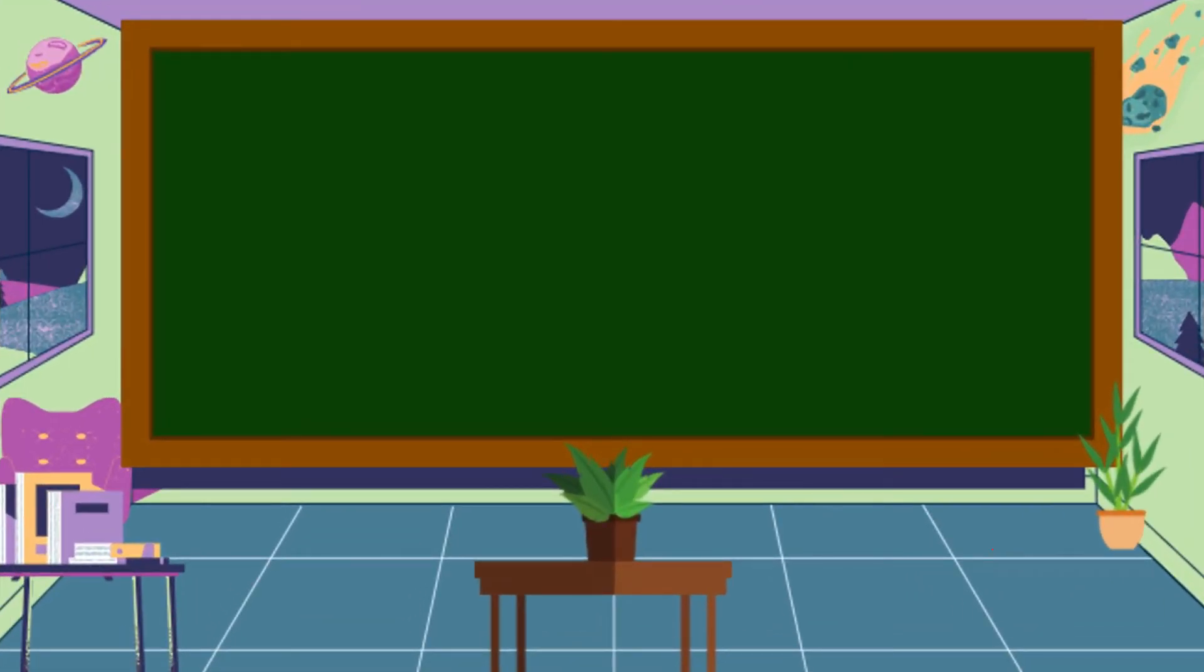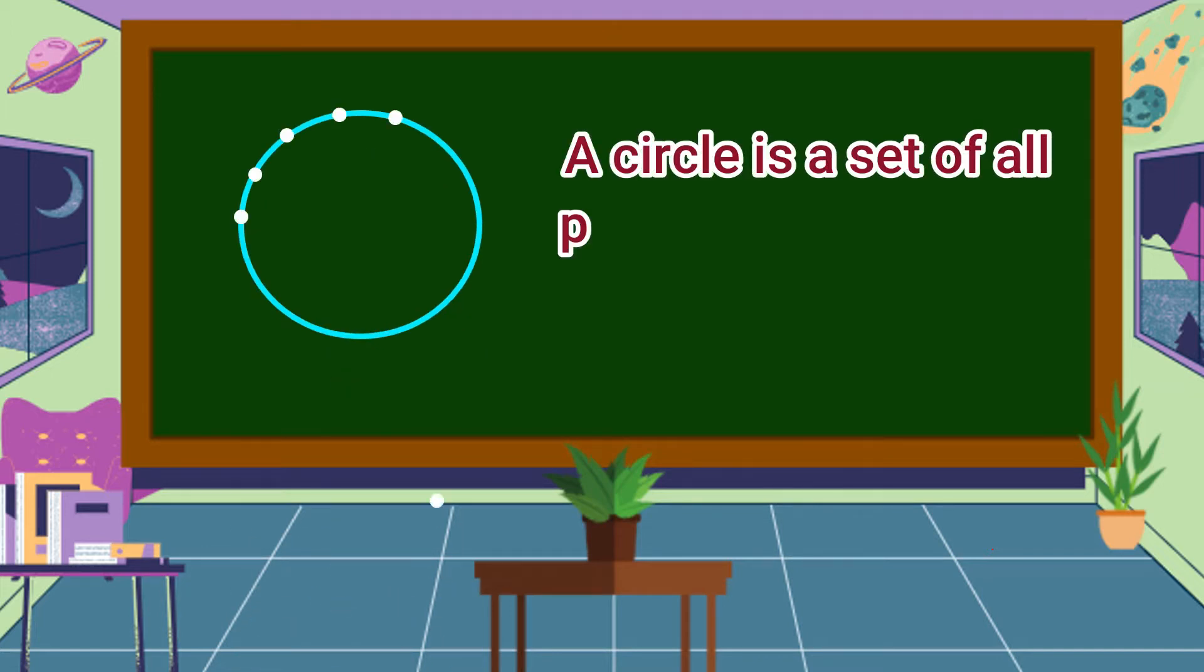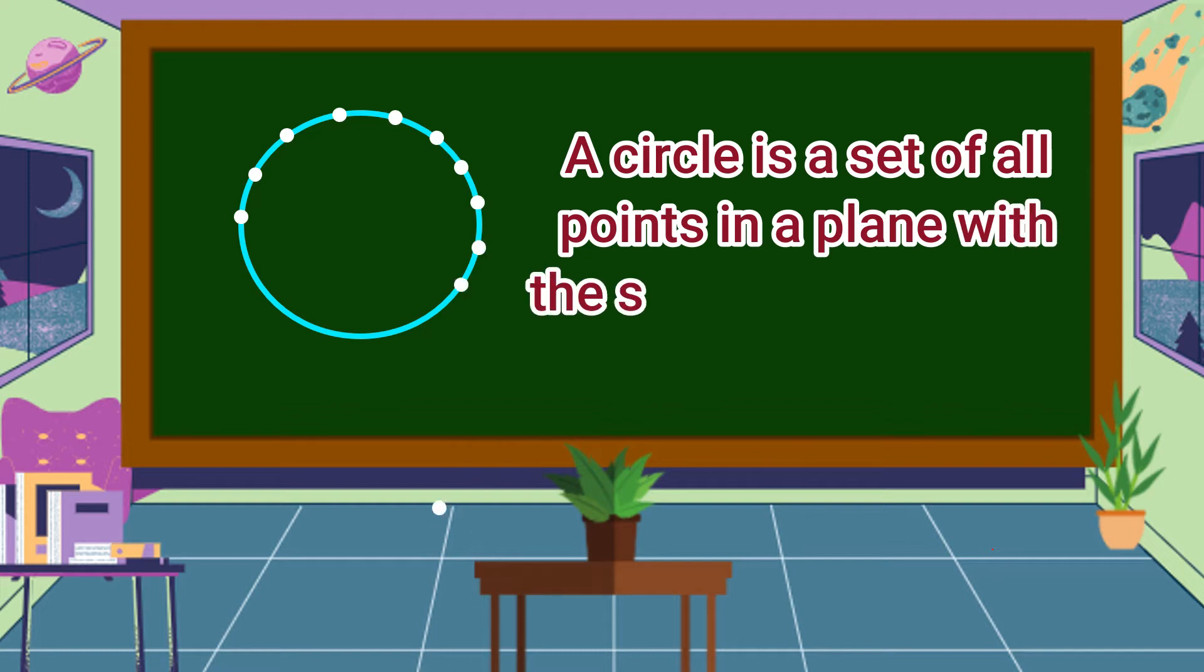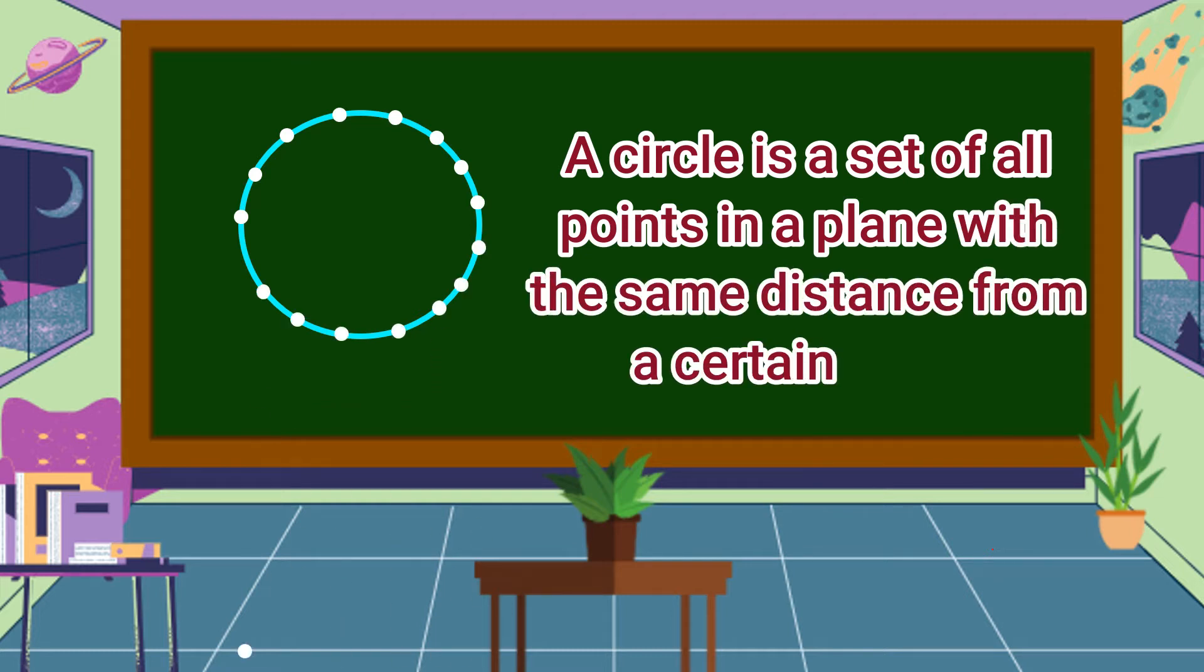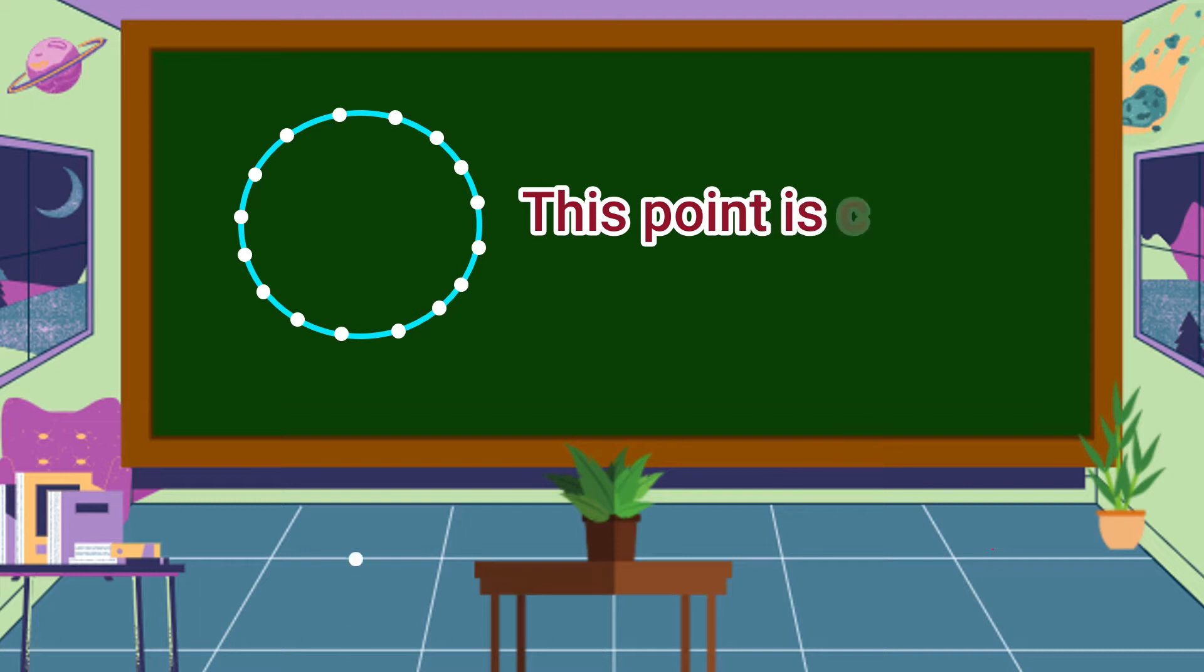Let's define first what is a circle. A circle is a set of all points in a plane with the same distance from a certain point. This point is called the center of the circle.